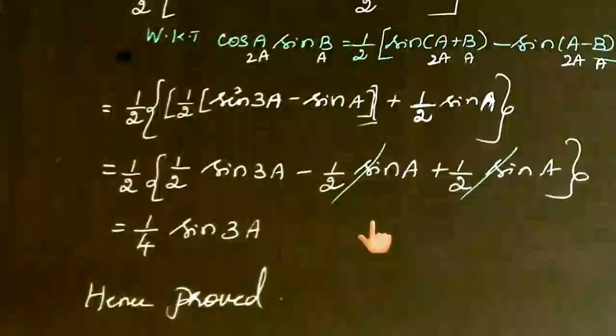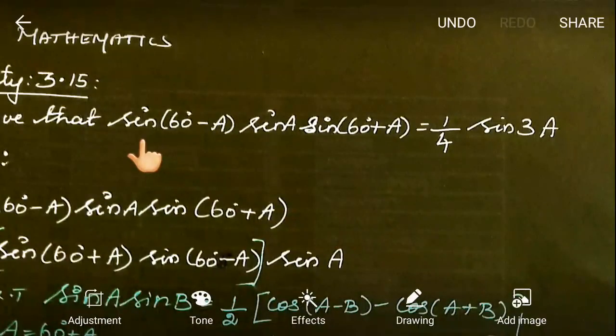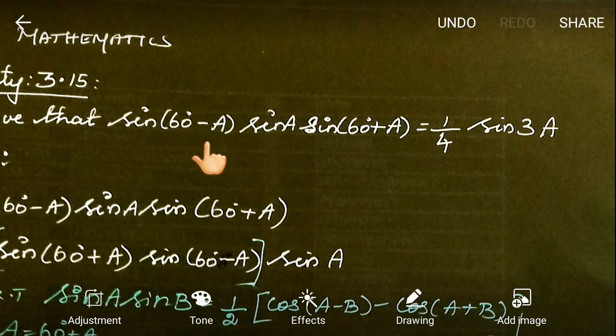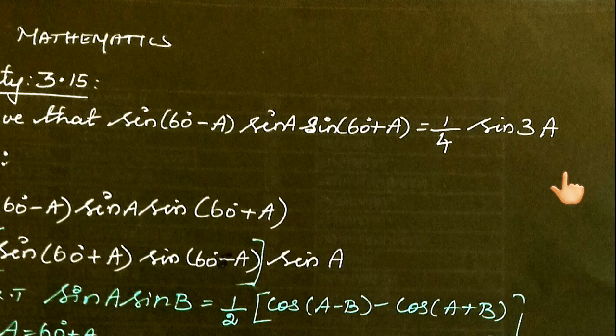We have proved the right-hand side. Hence proved. The identity is: sin(60-A) × sin(A) × sin(60+A) = 1/4 sin(3A). Thank you.